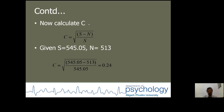The formula to calculate the contingency coefficient is: the square root of (S minus N) divided by S. Here S is equal to 545.05 and N is 513, the number of participants in our study. Putting the values into the formula gives 0.24, which is the correlation coefficient between the two variables: marriage adjustment and education of husband.